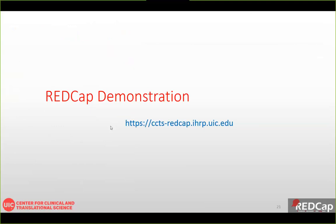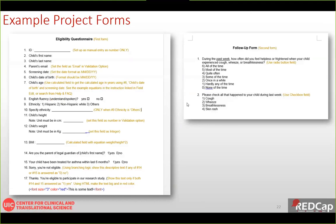Now I will demonstrate the basic process of creating a project and setting up some options. Let's say we are doing a randomized control trial for children with asthma. To enroll participants, a screening or eligibility form will collect information about the child and their parents. For those eligible, follow-up data collection will check the parents' emotional status and the child's asthma conditions to test the intervention effect. We have two simplified forms: an eligibility/screening form and a follow-up form.